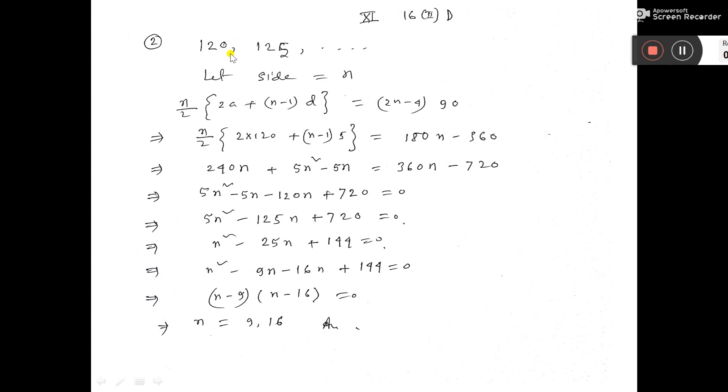The smallest angle, 120, is given, and the common difference is 5. That means the other angles will be 125, another one 130, and it will continue like this.